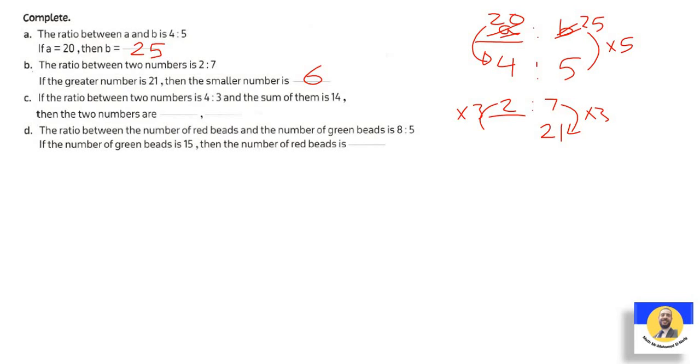If the ratio between two numbers is 4 to 3 and the sum - don't forget, when they say 4 to 3 and the sum, write the sum. Do 4 plus 3 equals 7. And they give us the sum is 14. Who are the two numbers with sum 14? Easy. Where did I get the sum from? I did 4 plus 3. So 7 becomes 14 by 2. So each number multiply by 2: 4 by 2 equals 8, and 3 by 2 equals 6.